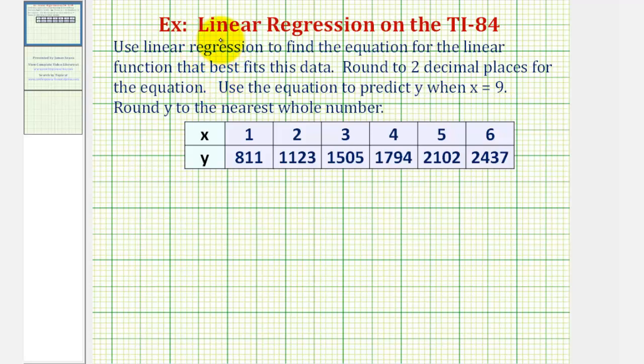In this example, we'll perform linear regression on the TI-84 graphing calculator. We want to use linear regression to find the equation for the linear function that best fits this data, round to two decimal places for the equation, then use the equation to predict y when x = 9, and round y to the nearest whole number.